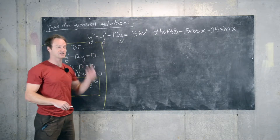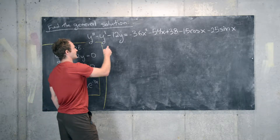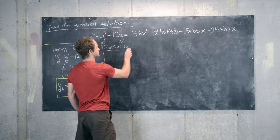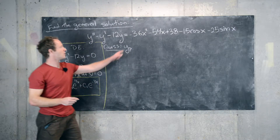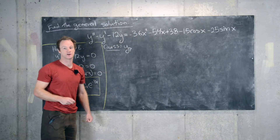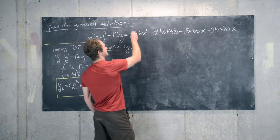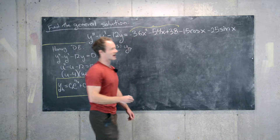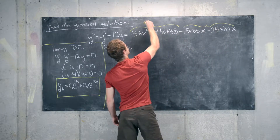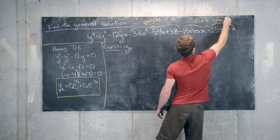Now, to find particular solutions, we'll use the method of undetermined coefficients. We guess that our particular solution y_p has a form similar to the forcing function — the right-hand side of the differential equation. Notice it breaks naturally into two pieces: a quadratic polynomial, and a linear combination of trig functions — sines and cosines.